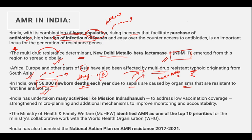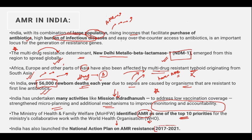India has undertaken many activities like Mission Indradhanush, running innovative vaccination coverage through Mission Indradhanush, which is there to strengthen micro-planning and additional mechanisms to improve monitoring and accountability of vaccinations. The Ministry of Health and Family Welfare has identified AMR as one of the top 10 priorities for collaborative work with the WHO, and a National Action Plan on AMR resistance from 2017 to 2021 has also been launched.